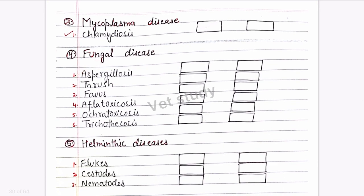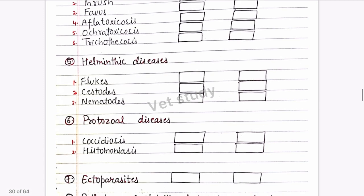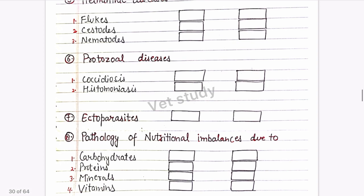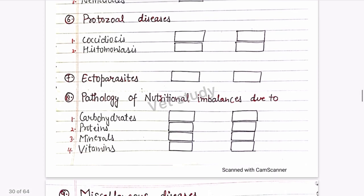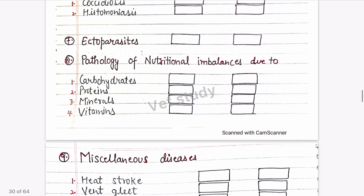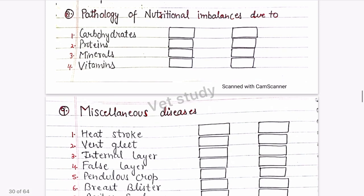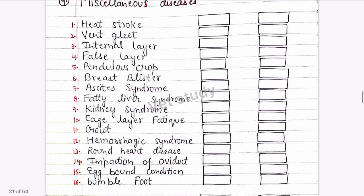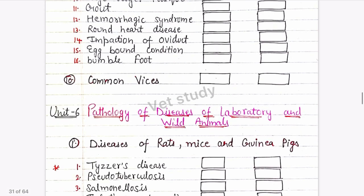Aspergillosis should be read carefully. For parasites in poultry: helminths, protozoa, and coccidia. Nutritional imbalance is not much asked. For poultry management conditions: cage layer fatigue, false layer, bound condition, and bumblefoot — prepare these for short answers.